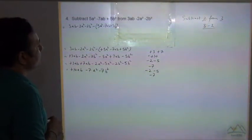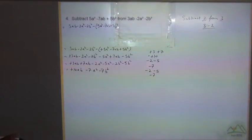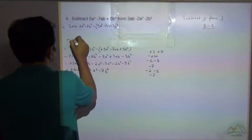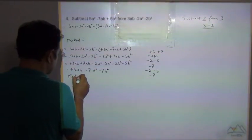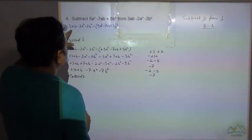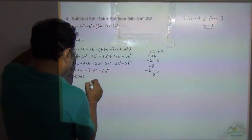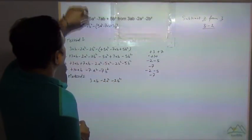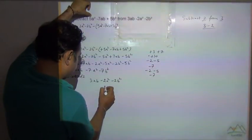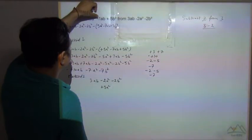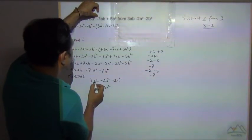Now let's see Method 2, which is the column method. In the column method, we have to subtract the first expression from the second: 3ab minus 2a² minus 2b². We write 5a² — no sign means plus sign — minus 7ab, aligning like terms in columns.